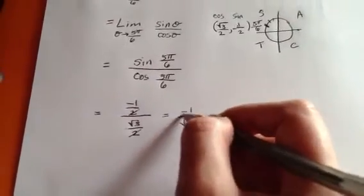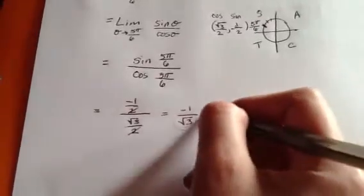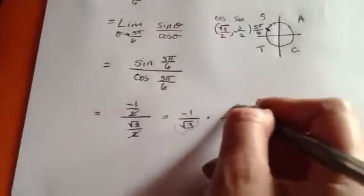We cannot leave square root of 3 at the bottom, so we multiply top and bottom by square root of 3.